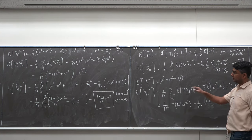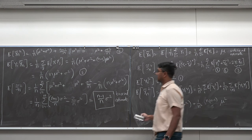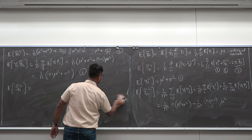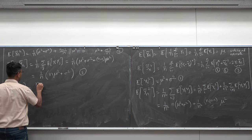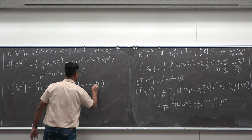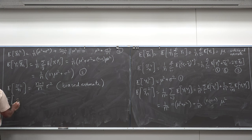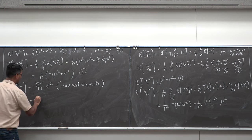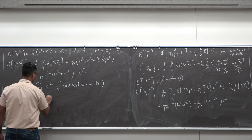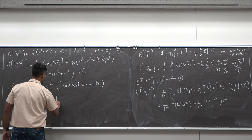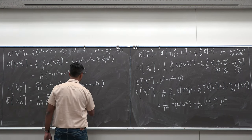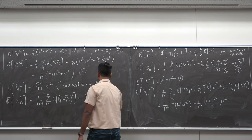If I look at the other estimator — with n−1 in the denominator — its expected value is (n−1)/(n−1) · sigma² = sigma². So this is an unbiased estimator of the variance. That is why we use n−1 in the denominator: it corrects for the bias introduced by using the estimated mean rather than the true mean.